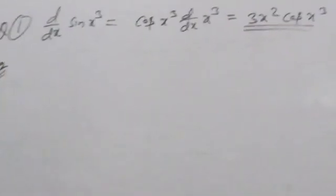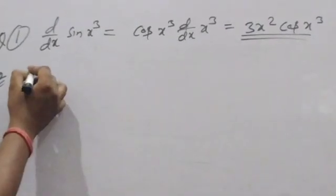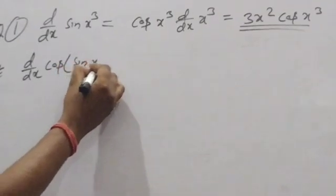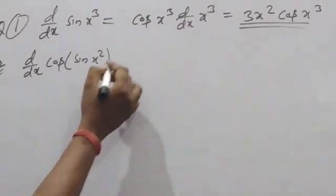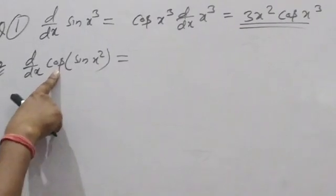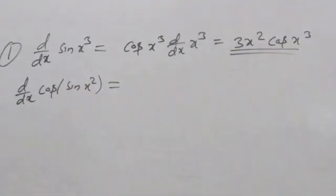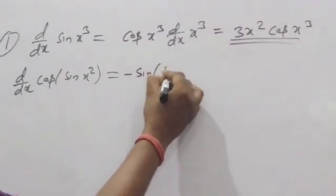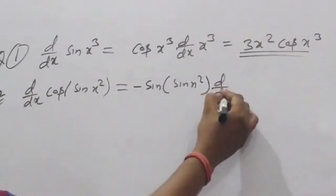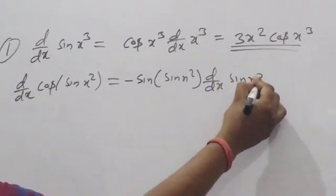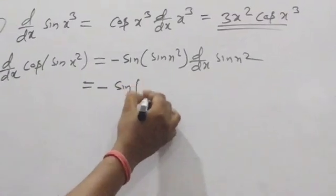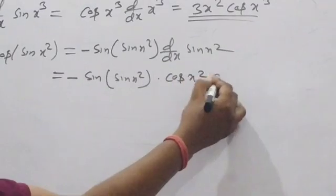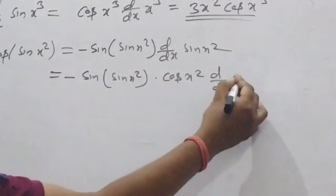Question number 2: d/dx of cos(sin(x²)). Here cos is the outer function and sin(x²) is the inner function. Differentiating cos gives minus sin(sin(x²)), then multiply by d/dx of sin(x²). Differentiating sin gives cos(x²), then multiply by d/dx of x².